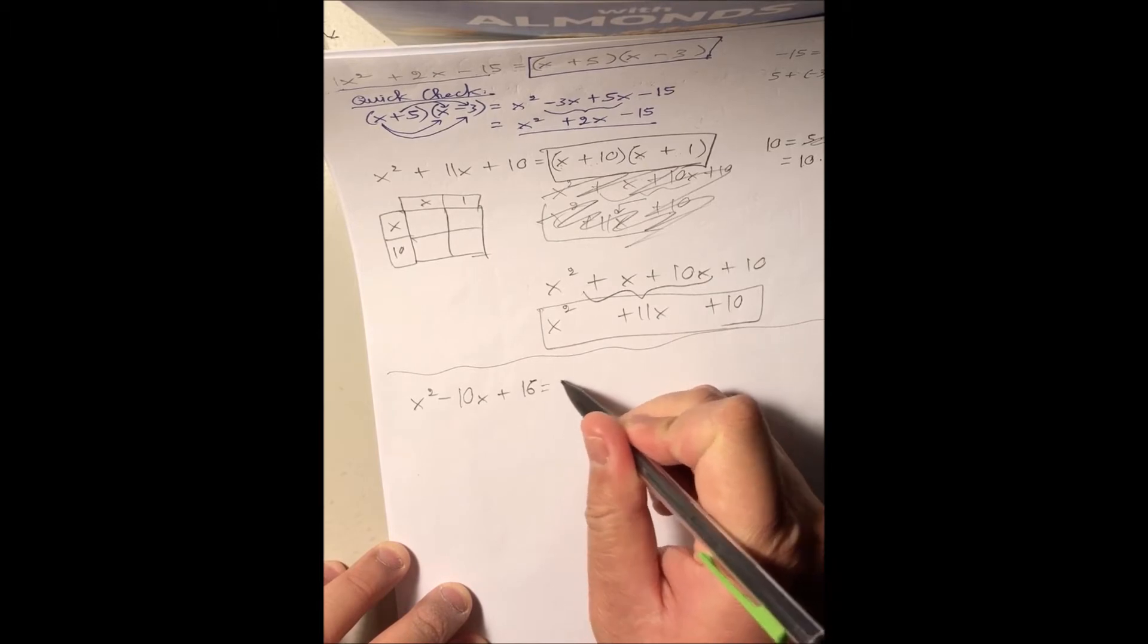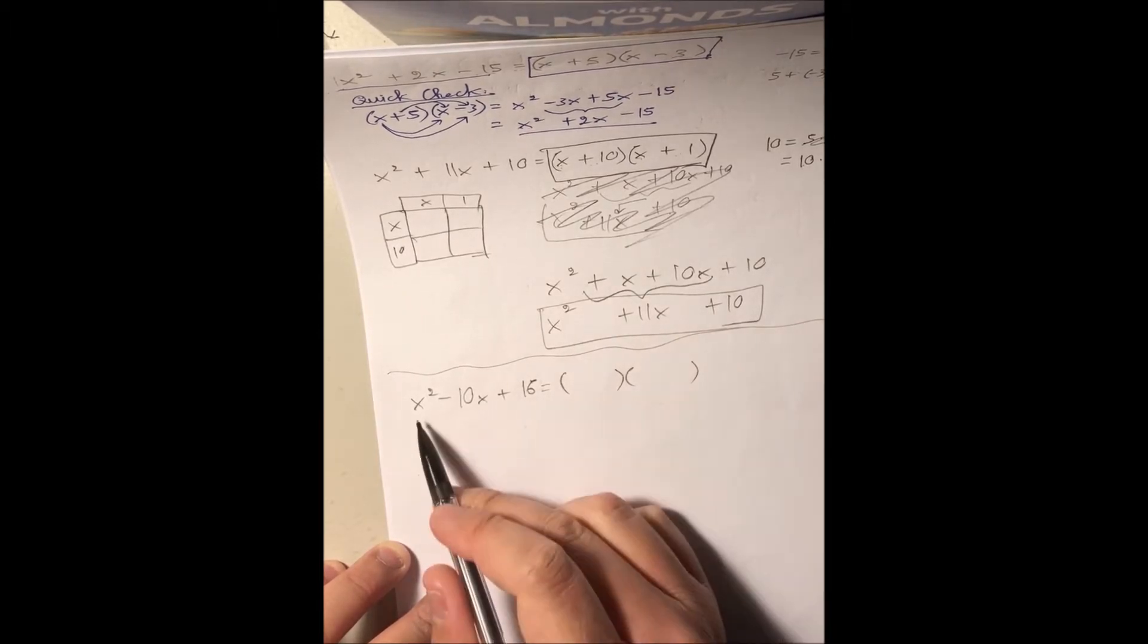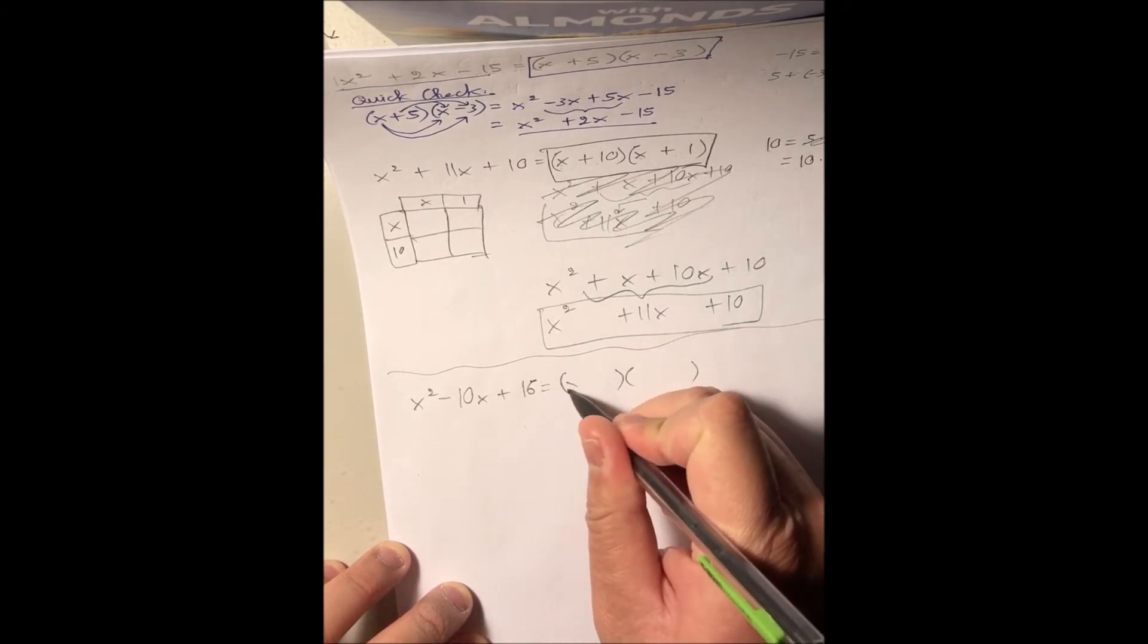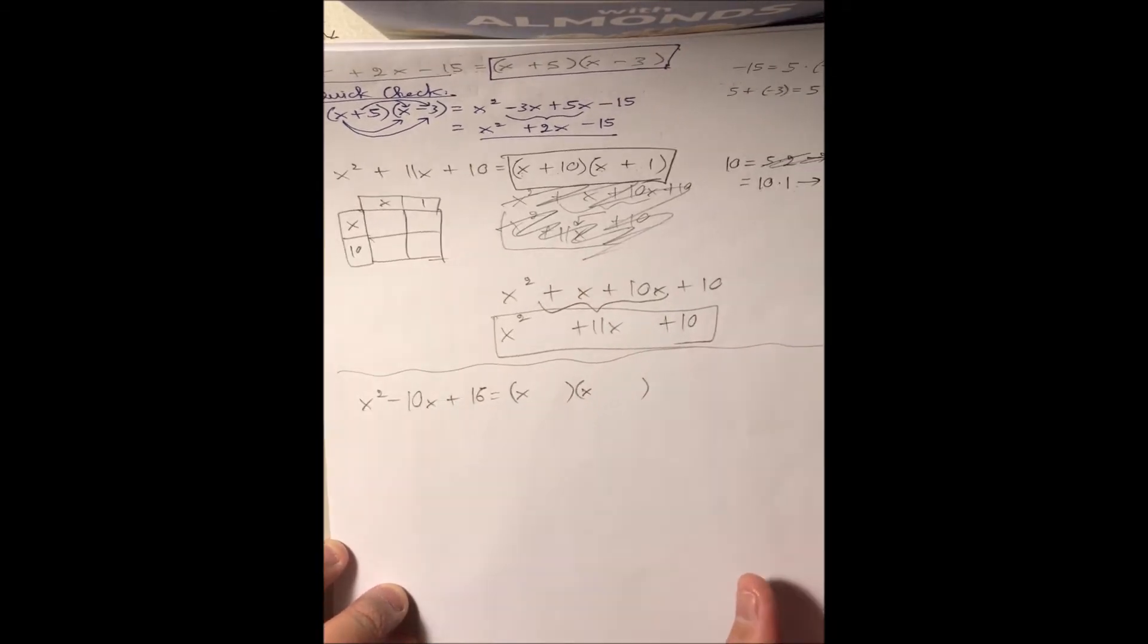So for the first term, as usual, x squared is the product of positive x and positive x. So we place it there.